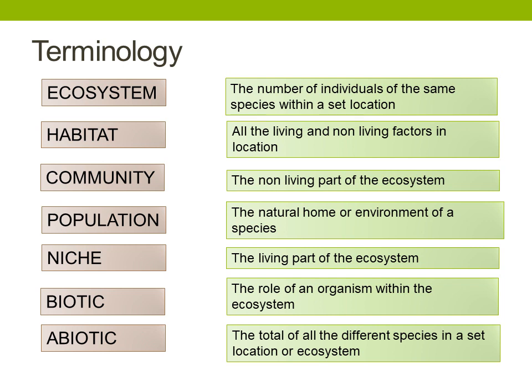Let's start by having a look at some of the terms that you're going to need to know. On the left here we've got a range of individual terms: ecosystem, habitat, community, population, niche, biotic and abiotic. These are not the only terms you're going to need but they are some of the most important ones to start with. I'm going to give you a few moments to have a look at the definitions on the right and I would like you to see if you can match up your understanding of the ones on the left to the ones on the right.